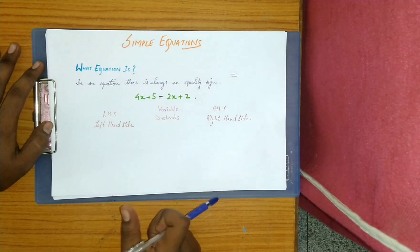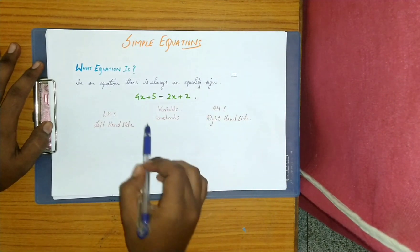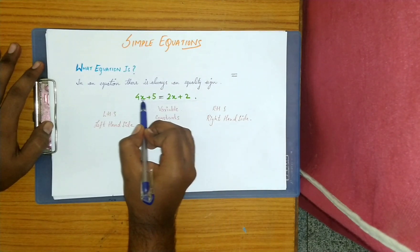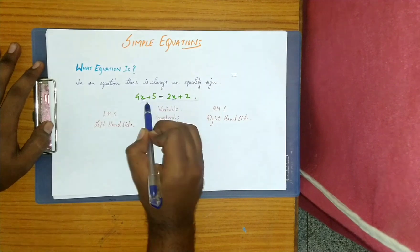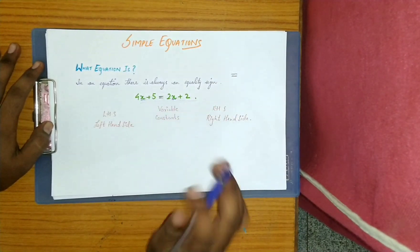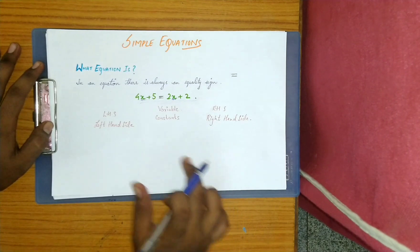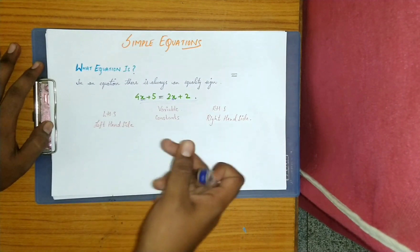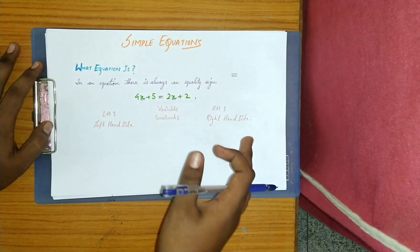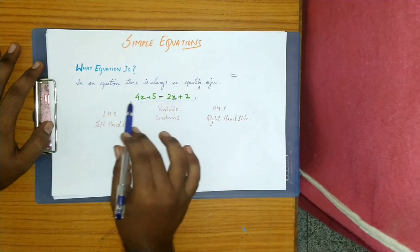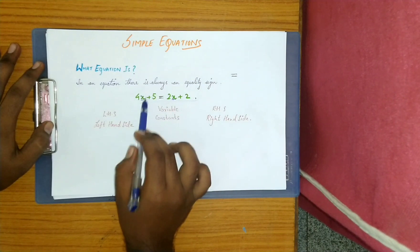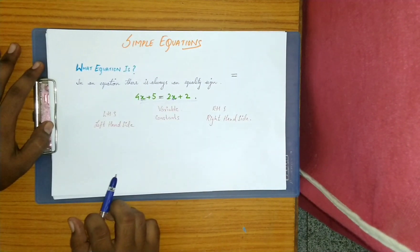The combination is of variables and constants. In this equation, there is only one variable, that is x. Both x's here are the same. x is a variable — in many equations you can use different variables like alphabets x, y, z, or anything. This is the equation.